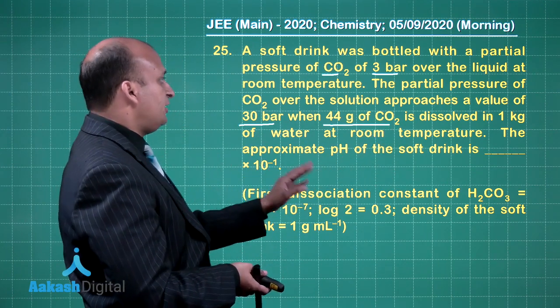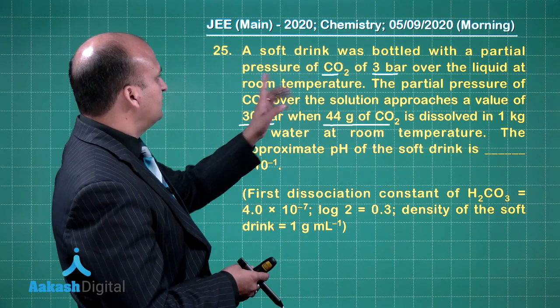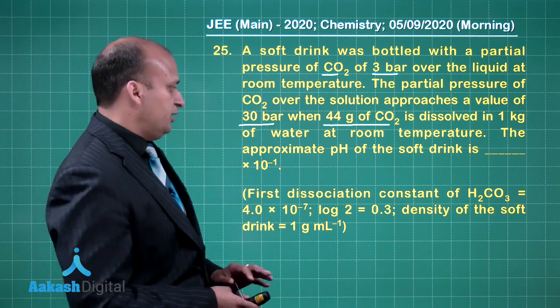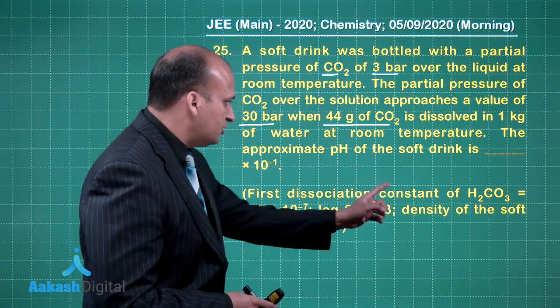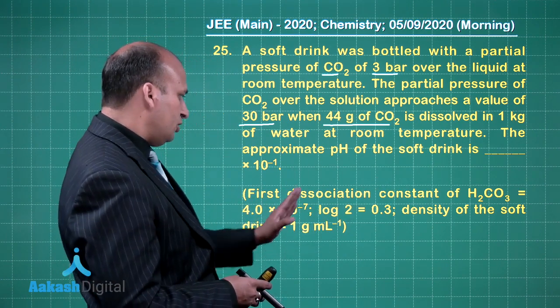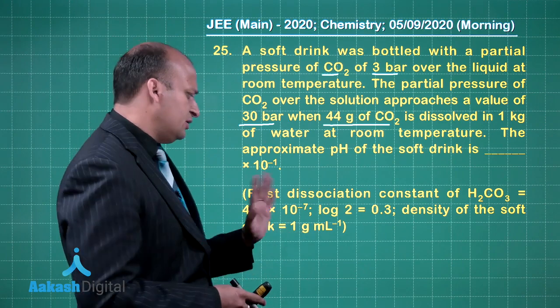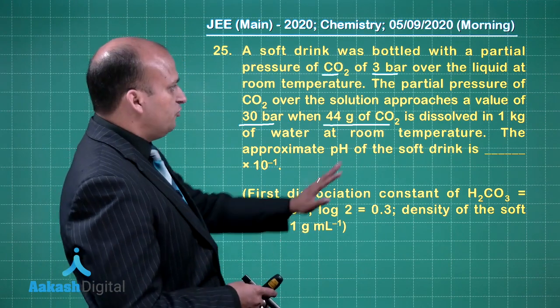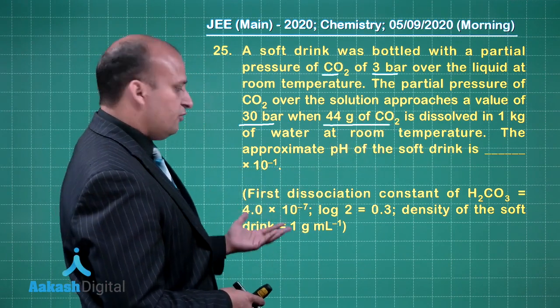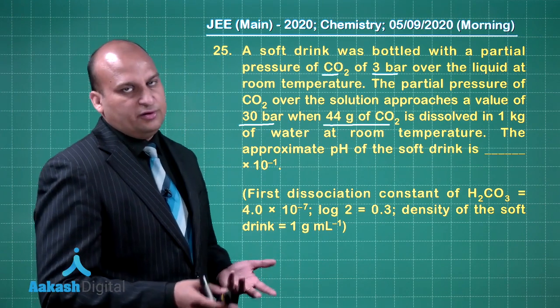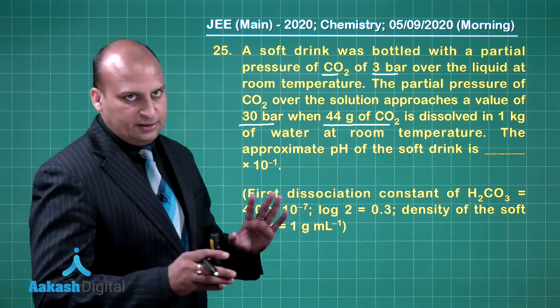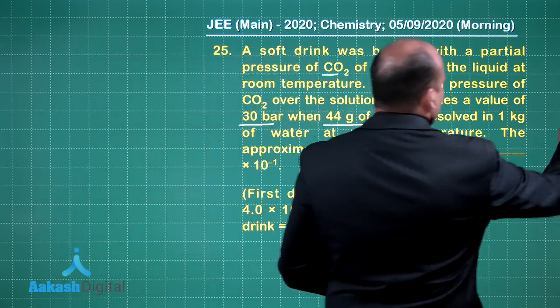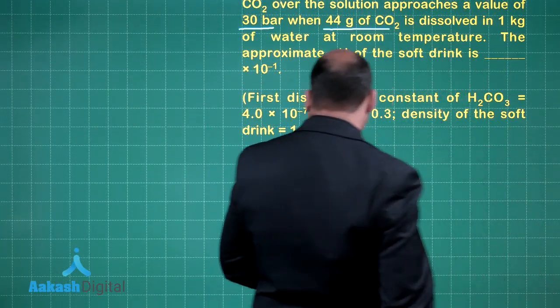The approximate pH of this soft drink which contains CO2 at 3 bar. What is the use of this data? We will check it out. First dissociation constant of H2CO3 is given to you, log 2 is given, density of the soft drink is given as 1 gram per milliliter. So 1 kg of this solution we will consider as basically 1000 milliliters.